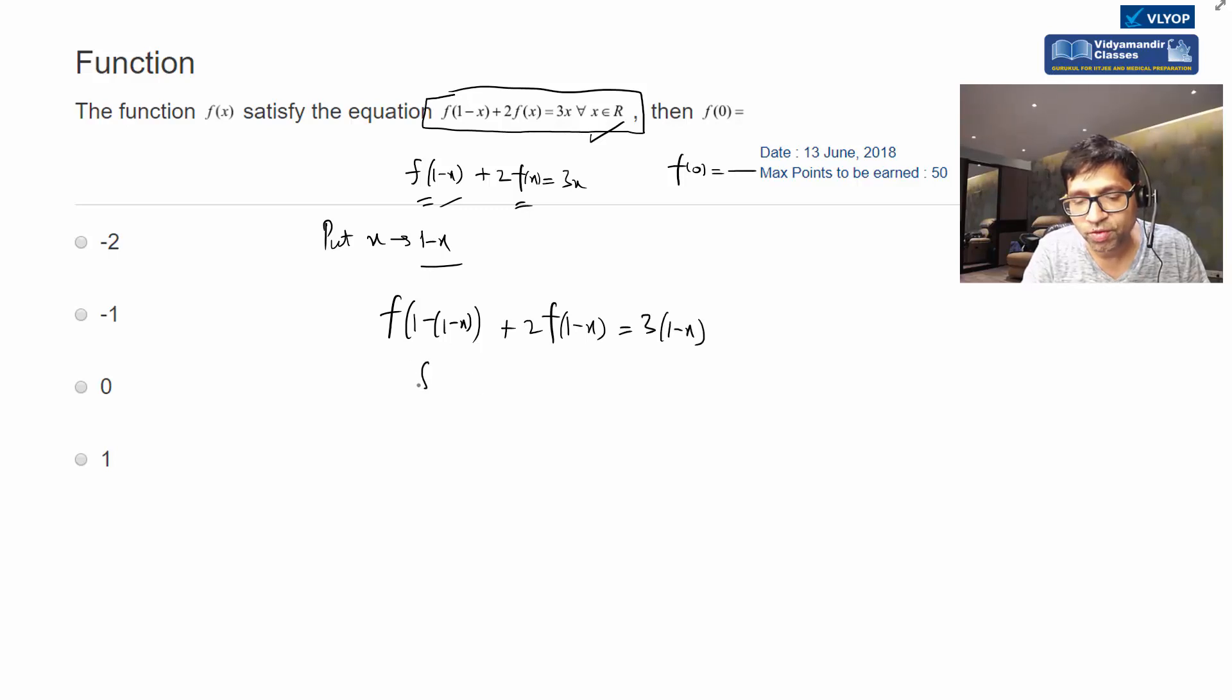Now if you see, this is the equation: f(x) + 2f(1-x) = 3(1-x). This equation has x replaced by (1-x). The original equation was f(1-x) + 2f(x) = 3x. Now this (1-x) is here and x is here.